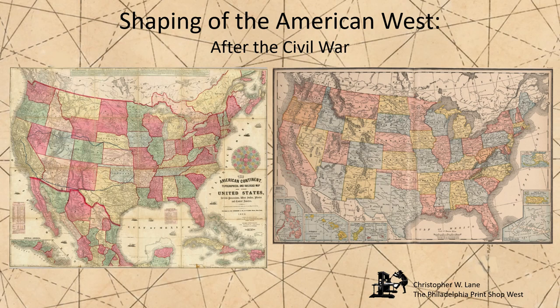As we saw in the previous lecture in this series, during the years leading up to the Civil War, there was a large increase in the population of the Trans-Mississippi West, which led to a demand for the breaking up of the large Western territories into smaller territories and states. Such political developments were, however, difficult to bring about because of the contentious issue of slavery. This changed when the Southern states seceded from the Union, which allowed the now Northern-dominated Congress to create five new territories during the Civil War.